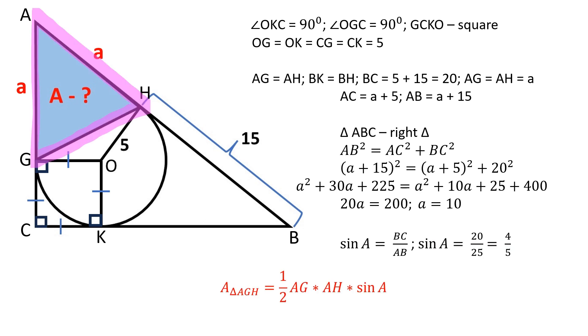The area of a triangle is equal to half of the product of its two sides and the sine of the included angle. Let's substitute in our values. The area of the triangle AGH is equal to 40 square units.